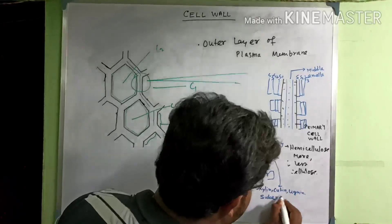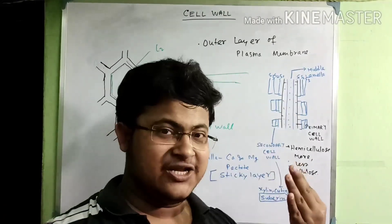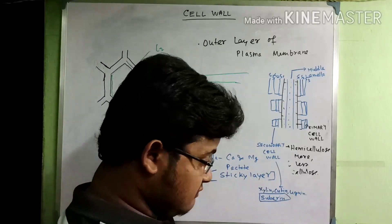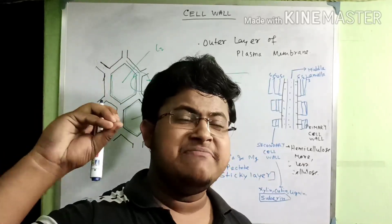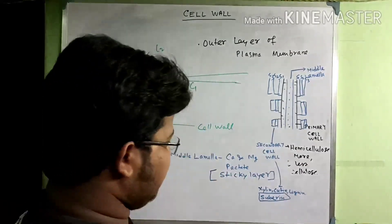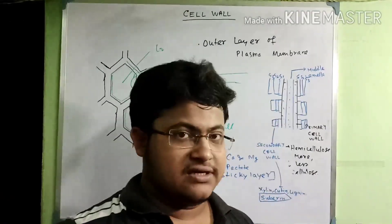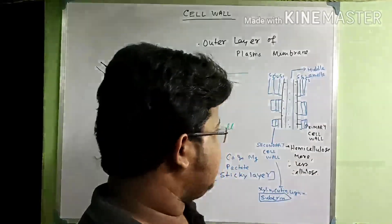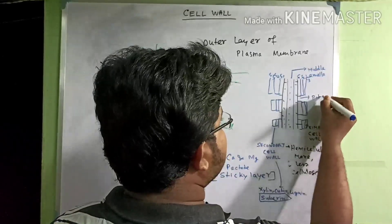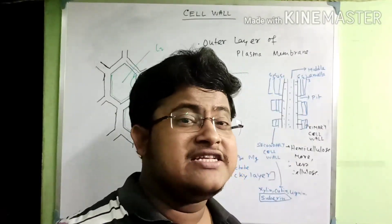There is also suberin present in the secondary cell wall. When suberin is deposited on the secondary cell wall, the cell becomes impermeable to water — water cannot move through. In some parts, the secondary wall is not deposited; this region is known as the pit.